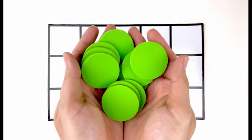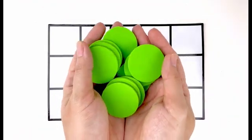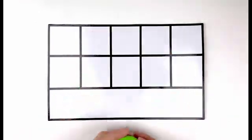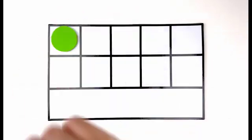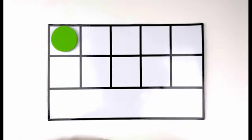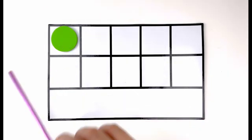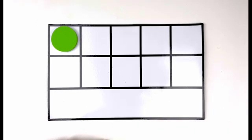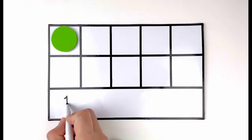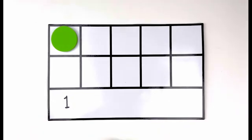Let's count my green circles. How many green circles do you see? Let's count together — one. One green circle. Number one.